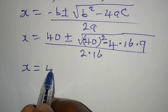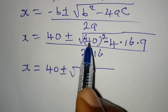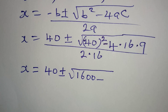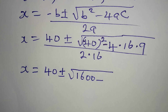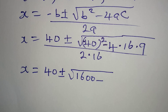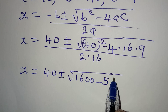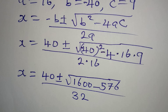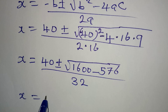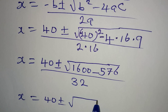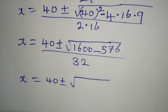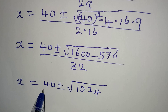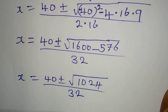So x equals 40 plus or minus the square root of: the square of negative 40 gives 1600, then minus 4 times 16 times 9 gives 576. So we have 1600 minus 576, all over 2 times 16 which is 32. Continuing, x equals 40 plus or minus square root of 1024, over 32.